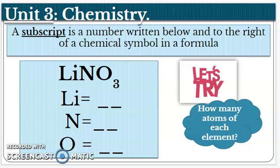A subscript is a number written below and to the right of a chemical symbol in a formula. Here in this chemical formula, we have lithium, nitrogen, and oxygen with a little 3 subscript.